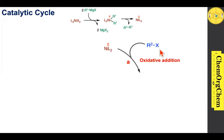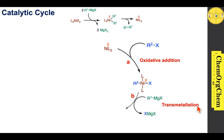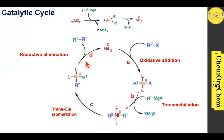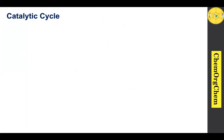Once you have the nickel(0) species, it undergoes oxidative addition with an organohalide to produce the corresponding nickel(2+) species. This nickel(2+) species then undergoes transmetalation with the Grignard reagent — just like a ligand transfer — where the R1 group transfers to the nickel species. The resulting intermediate undergoes trans-to-cis isomerization, then reductive elimination to produce the carbon-carbon coupling product, regenerating nickel(0) for another catalytic cycle.